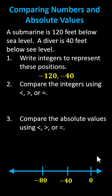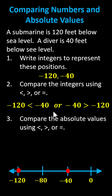We have negative 40, negative 80, negative 120. Now we can plot the two values: we have negative 120 on the far left, and we have negative 40 toward the right. Now to compare the integers using inequality symbols — because negative 120 is to the left of negative 40, we know negative 120 is less than negative 40.